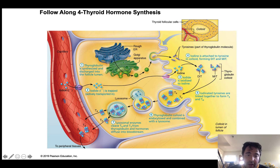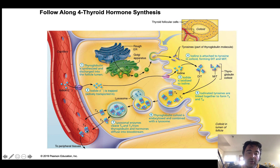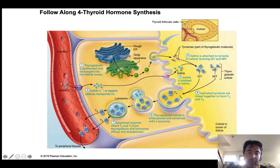Lysosomal enzymes then cleave non-functional parts, and the active hormones are secreted. It's important to note that even though you have T4 and T3, T3 is the active form of thyroid hormone — much more active than T4. In any target cell, T4 will be converted to T3 before it can trigger any physiological response. Some medications like Synthroid are T4, while others are T3 — they're different potencies. T4 is actually the preferred method because the body handles it more gradually, avoiding spikes in thyroid hormone levels.